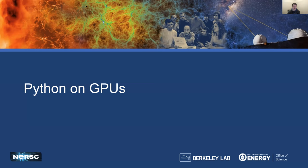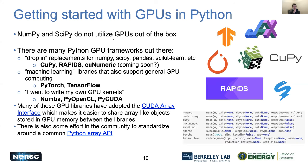Thanks, Lori. Today I hope to give a few slides on how to get started with GPUs in Python on the NERSC systems, in particular Perlmutter. You're probably familiar with NumPy and SciPy libraries that form the backbone of scientific computing in Python. Those libraries don't utilize GPUs out of the box, but there are many Python GPU frameworks out there. Some very popular ones serve as drop-in replacements for those core libraries like NumPy, SciPy, Pandas, and Scikit-Learn.